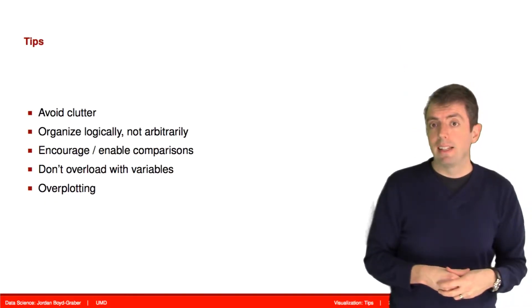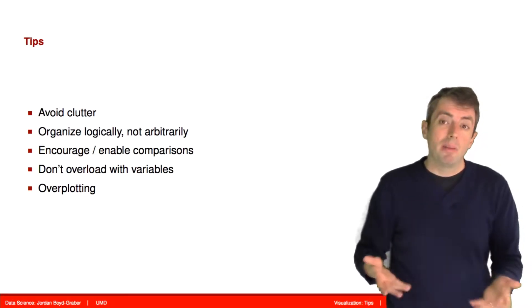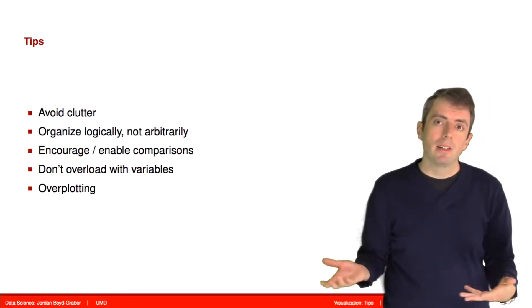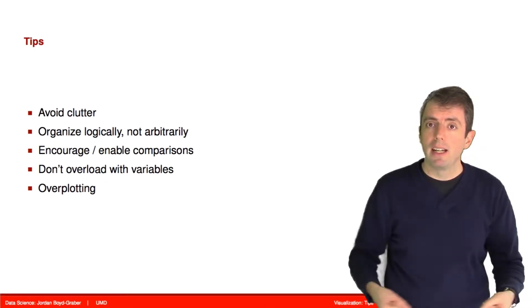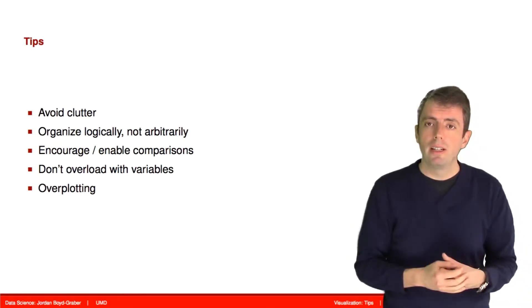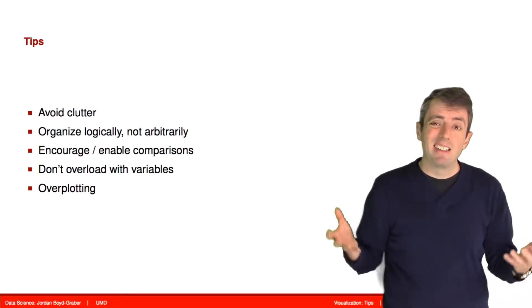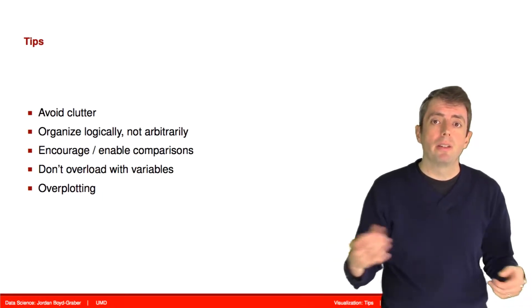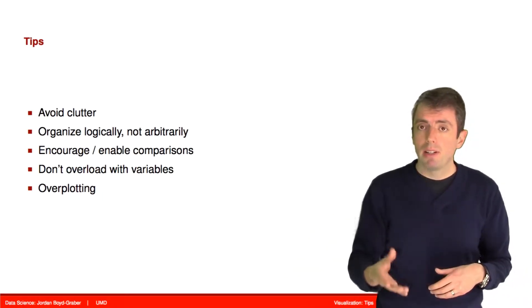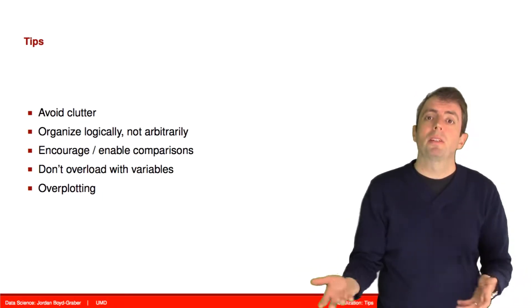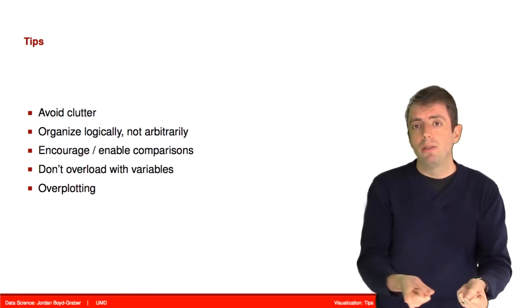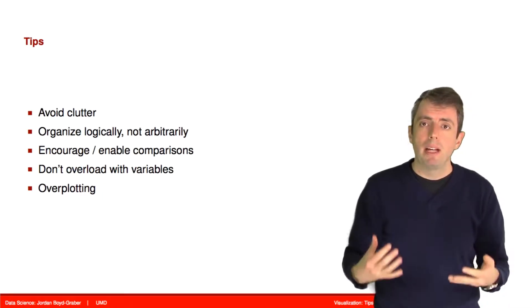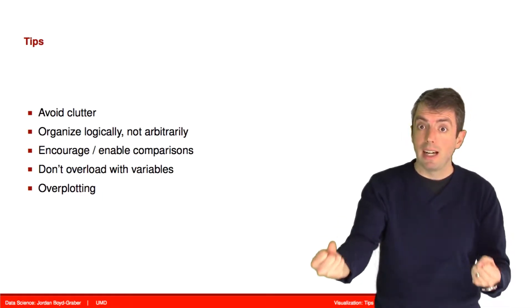Before we get into specific examples, let's talk about some overarching principles. Try to avoid clutter. Oftentimes when you have a lot of data and you run the default visualization, you get a lot of stuff, and that stuff may not all be important to the story you want to tell. Part of telling a good story is the principle of less is more. As you remove or de-emphasize aspects of your data, you may be able to draw the reader's eye to what's actually important.